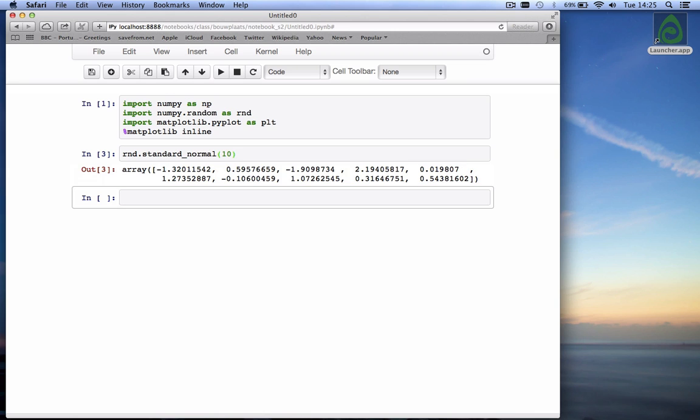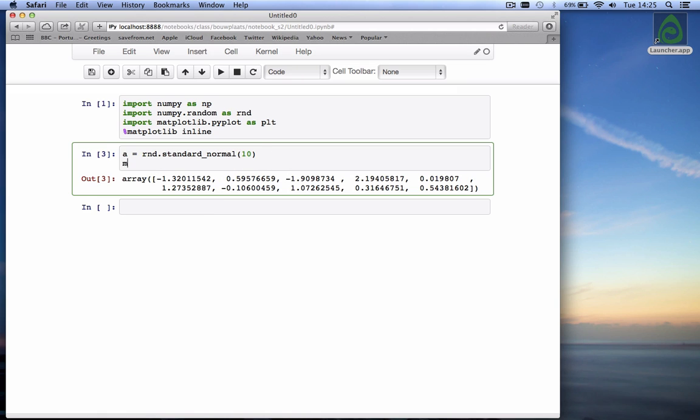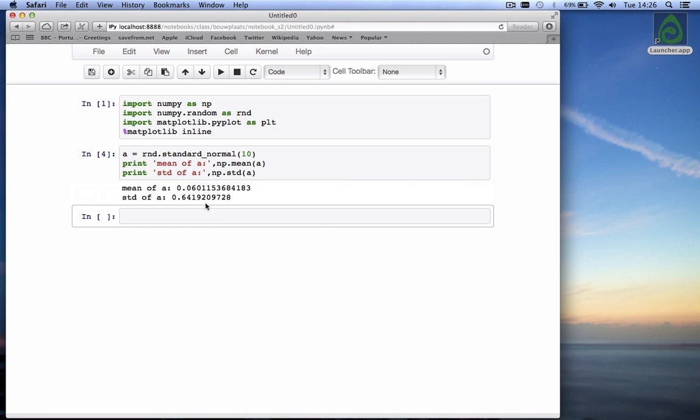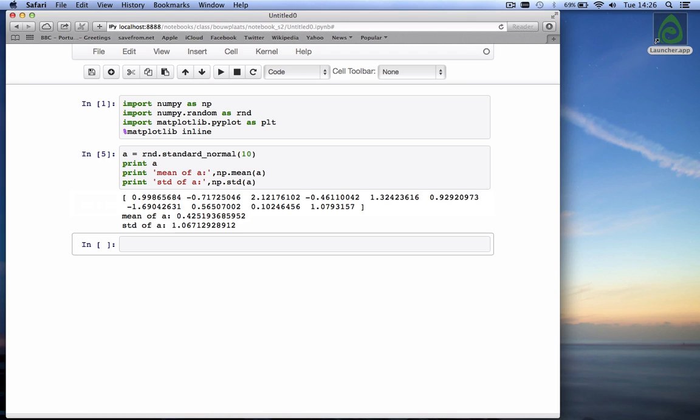Here are ten numbers from a standard normal distribution with mean zero and standard deviation one. If you run this code again, we of course get different numbers. Let's store these ten numbers in a variable or in an array called a and then calculate the mean and standard deviation. And you see that although we draw them from a normal distribution with mean 0 and standard deviation 1, the mean of those ten numbers is not 0 and the standard deviation of those ten numbers is not 1.